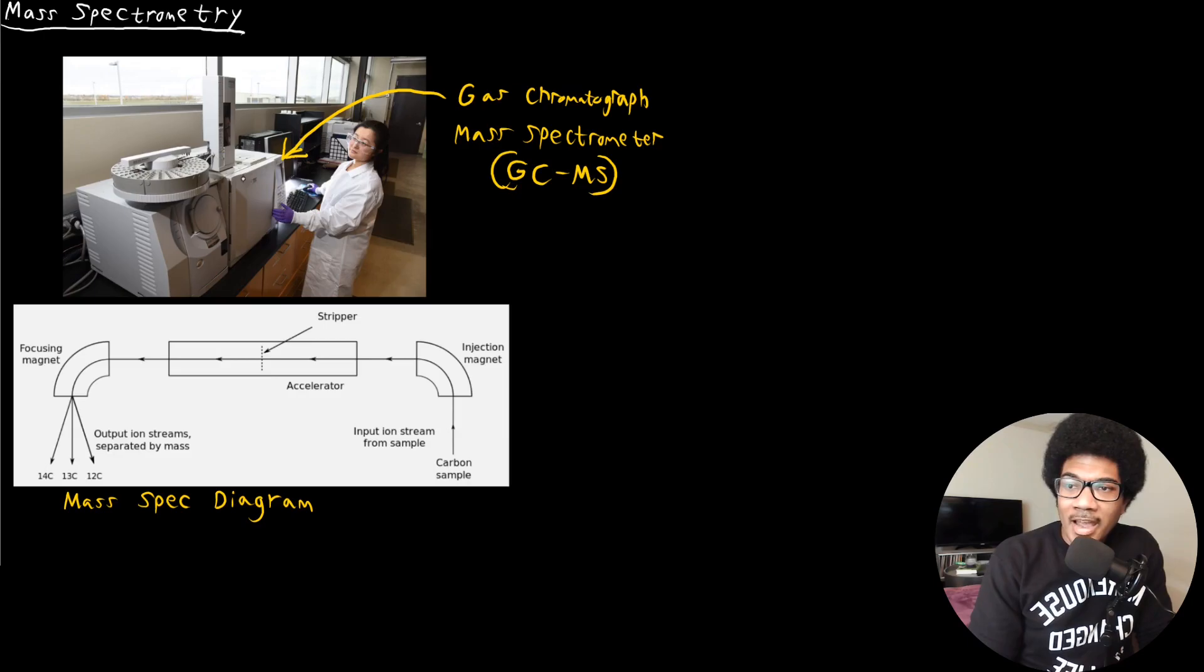Basically, the idea behind this is that both of these techniques together give you a very acute picture of molecular behavior when you're trying to identify a compound. So it's very unlikely that two molecules that are different would behave the same in both a gas chromatograph and a mass spectrometer.